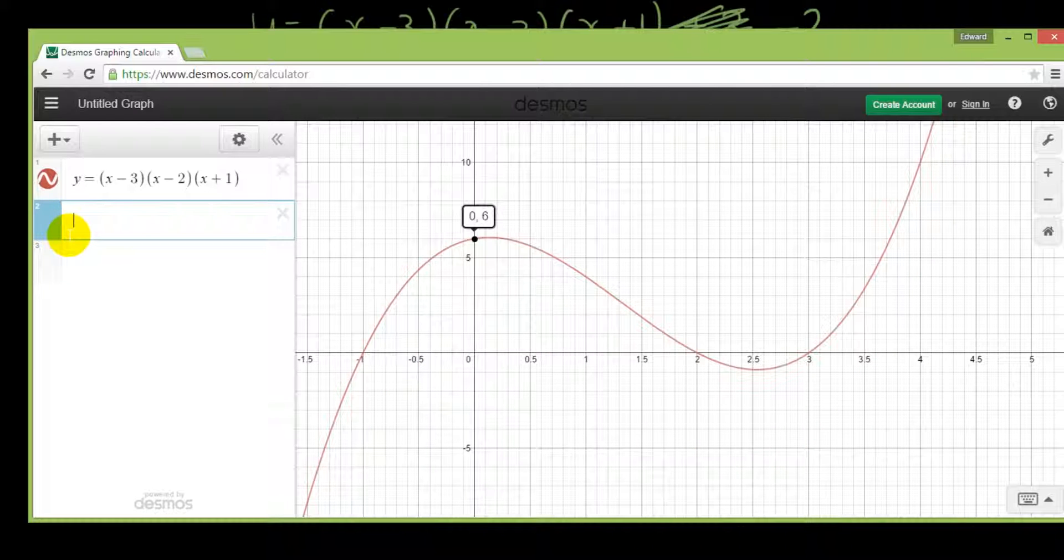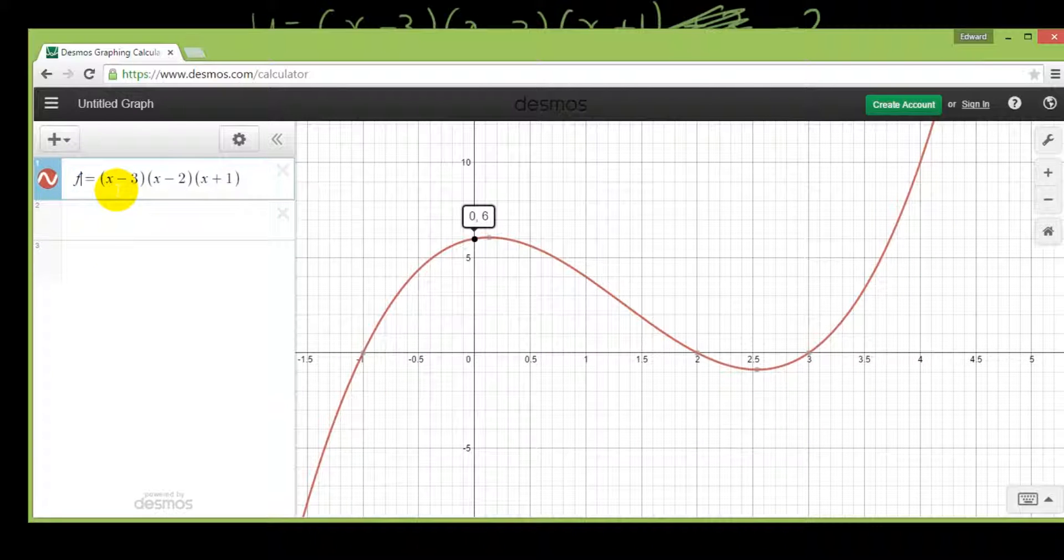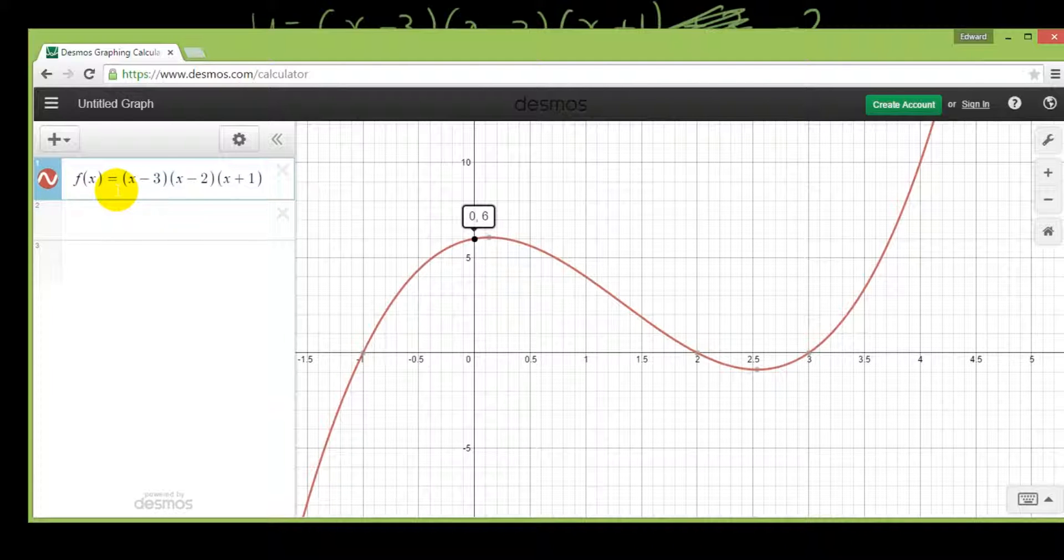And let's try, instead of typing y equals that, I'm going to type f of x equals that. Okay, so now I can just write y equals f of x. That is the original equation.